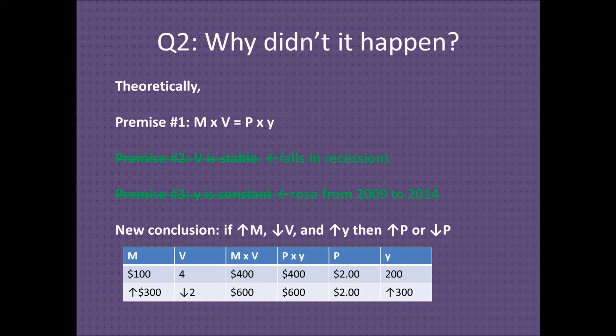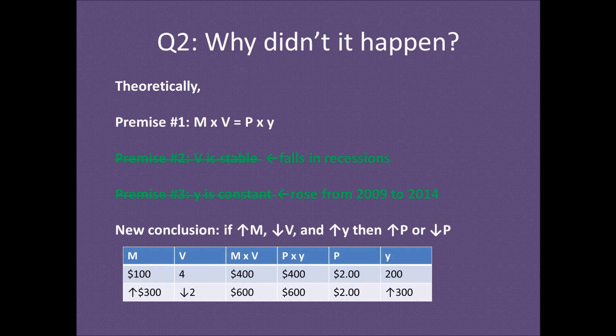Second, Y was not constant. After the financial crisis and the associated recession had ended, the economy did grow — so Y went up by quite a bit. I give an example here to show that it's possible for the money supply to triple and yet have no change in the price level whatsoever. I made up these numbers as an example — the idea is that with a fallen velocity and output recovering from its low during the financial crisis, it's possible for the money supply to triple and yet prices stay exactly the same.